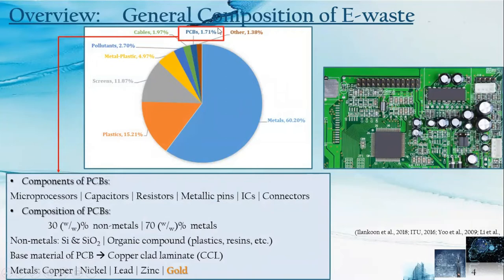PCBs support the connection of other electronic components through their conductive tracks. In PCBs, 70% of weight is metals. PCBs are considered as good sources for metals such as copper, nickel, lead, zinc, and gold.